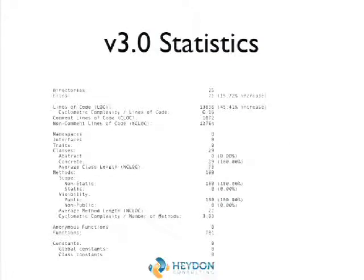Because the node system went in, Drupal doubled in size. We got about 71 files and 12,000 lines of code — it was getting bigger all the time.